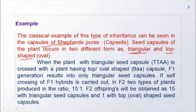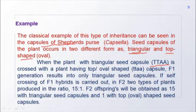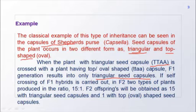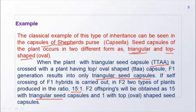When the plant with triangular seed capsule (genotype TTAA) is crossed with the plant having top oval-shaped capsule (genotype ttaa), the F1 generation results in only triangular seed capsules, as expected since F1 produces only the dominant character. When self-crossing of F1 hybrids is carried out, the F2 generation produces two types of plants in a ratio of 15:1 — 15 triangular seed capsules to 1 top oval-shaped seed capsule.